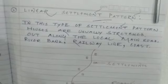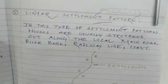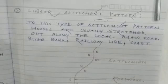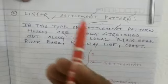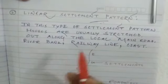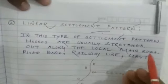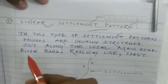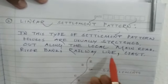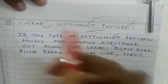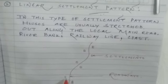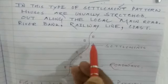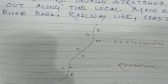The next settlement pattern is the linear settlement pattern. In linear settlement patterns, settlements are stretched out along the local main road — along a road, riverbank, railway line, or coastline. You can see there is a roadway, and along that roadway the settlements are found in a line.